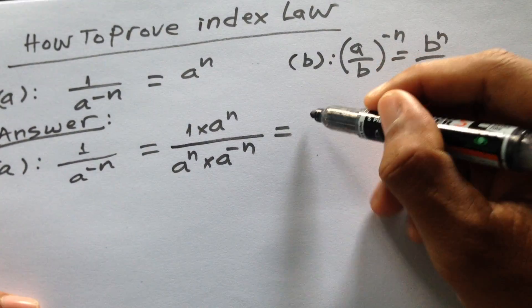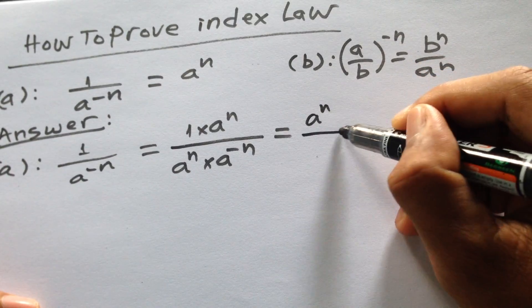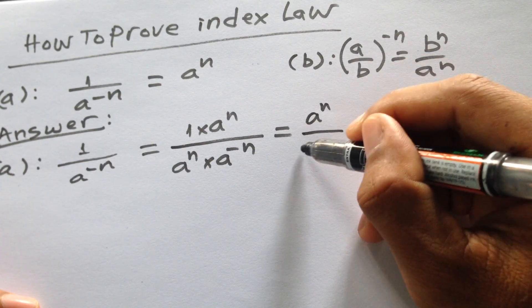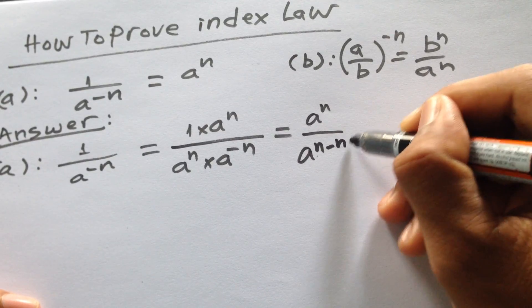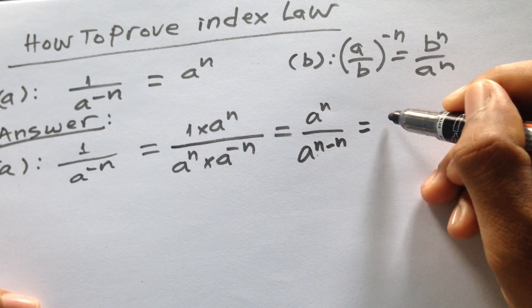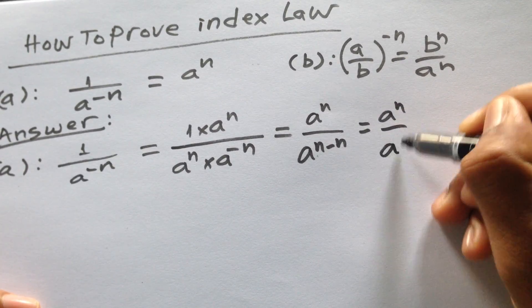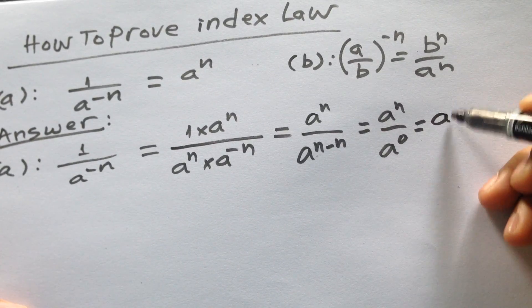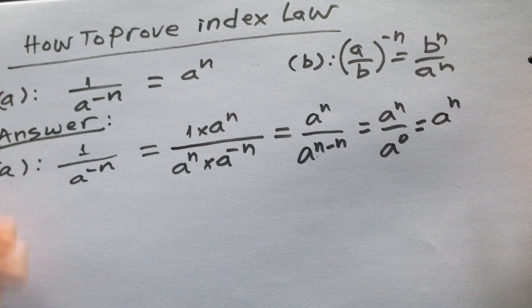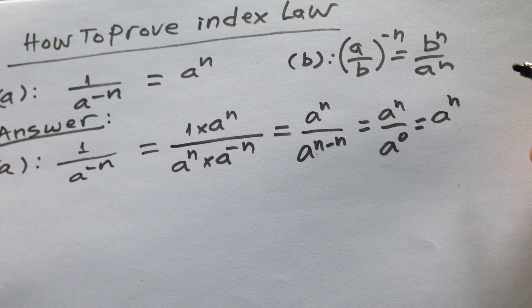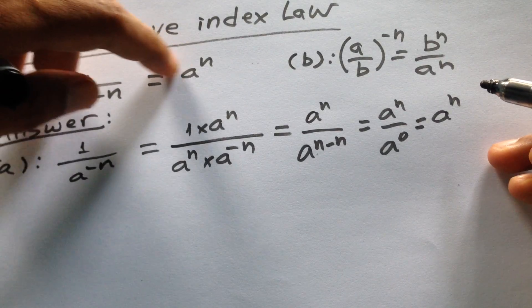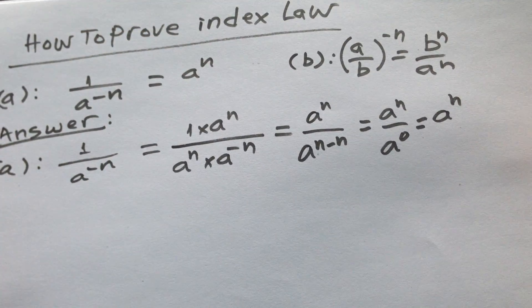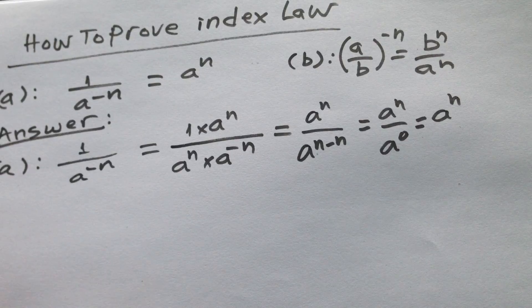Here we get a to the power n, and using the index law it will be a to the power n minus n, which equals a to the power n. You can see that it is equal to the right hand side.